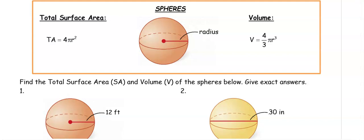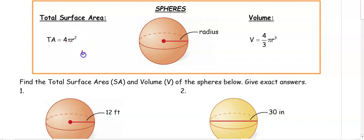For spheres, to find your total surface area, it's going to be 4πr². And then for volume, it's going to be 4/3πr³. One way to help you remember this is that surface area has r squared because it's units squared, and volume has r cubed because it's units cubed.